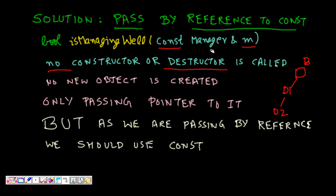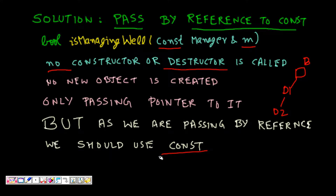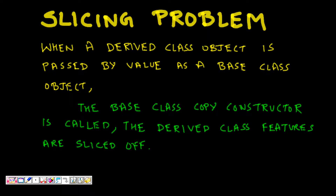Even passing by reference (without const) would work to avoid copying, but why do we add the word 'const'? If I pass by reference, it is almost like passing by pointer, and someone could change the object itself inside the function. To prevent that, we write it as a const reference so that the object cannot be changed inside the function. We are not copying it, hence we save space on the stack and we avoid calling any constructors and destructors.